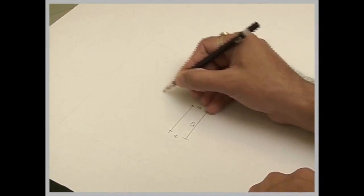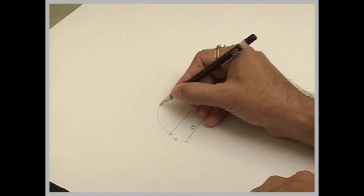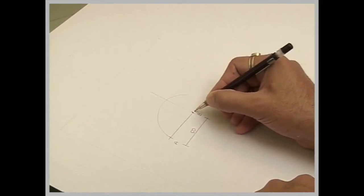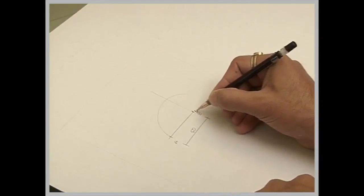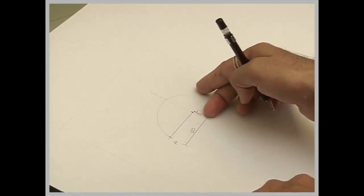First we will draw a perpendicular. We will take B to A and draw one arc. Let's say this is point number 1. From 1 to A, I have taken this distance and will draw one arc.